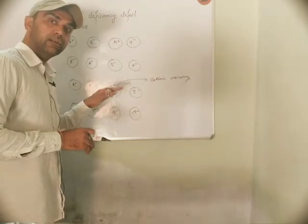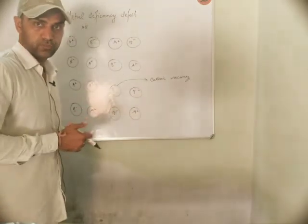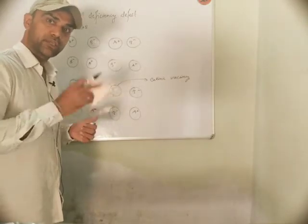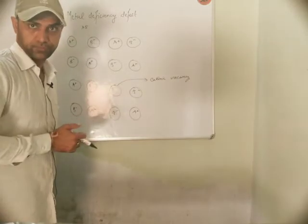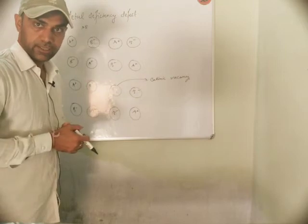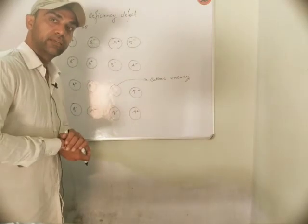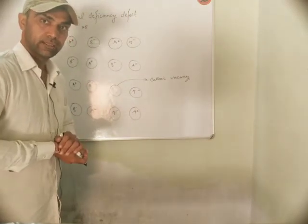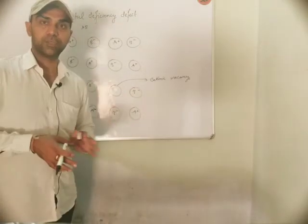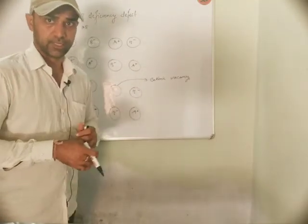So the metal's cationic vacancy means its deficiency is less — we call this metal deficiency defect. This is a non-stoichiometric defect. As we mentioned at the beginning when we discussed the definition of non-stoichiometric defects, we gave an example. Let us take that example now.